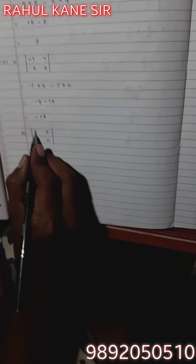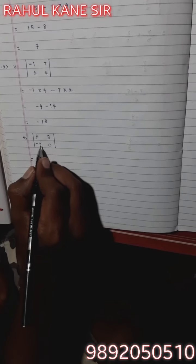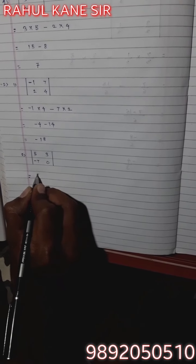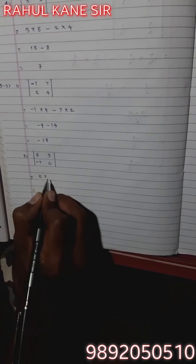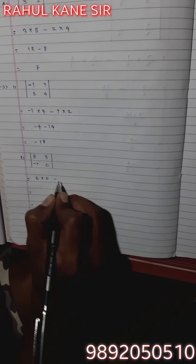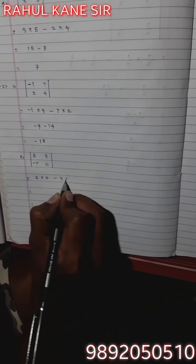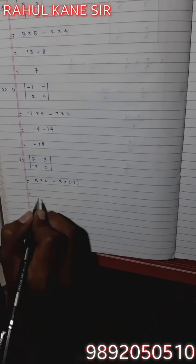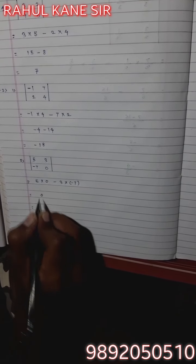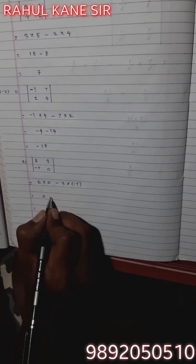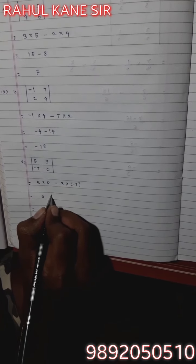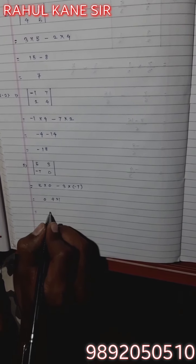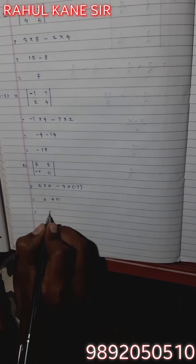Next one: absolute value of |5, 3, -7, 0|. The solution is 5 multiplied by 0 minus 3 multiplied by (-7). 5 times 0 is 0. Minus times minus gives plus, so 3 sevens are 21. So 21 plus 0 equals 21.